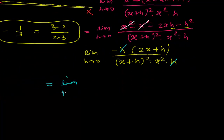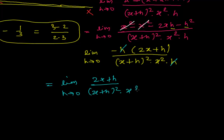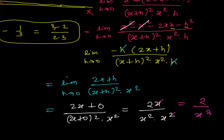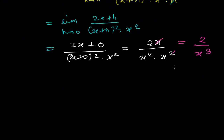After cancelling h, we have: limit h tends to 0 of minus(2x + h) divided by (x+h)² times x². Now I can easily substitute h = 0, and I get: minus(2x + 0) divided by (x + 0)² times x², which is minus 2x divided by x² times x², that is minus 2x over x⁴. Cancelling one x, I get minus 2 divided by x cubed.